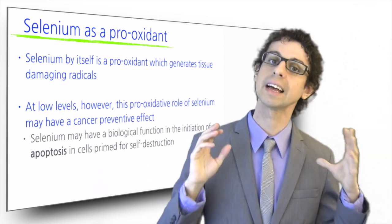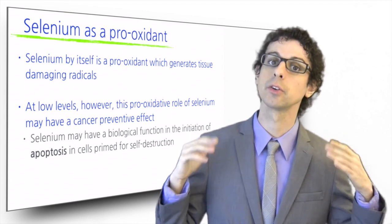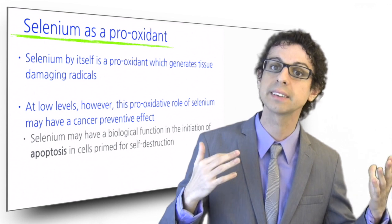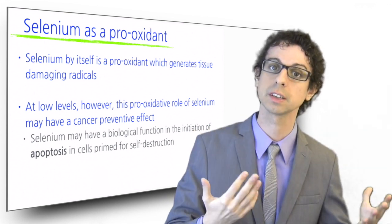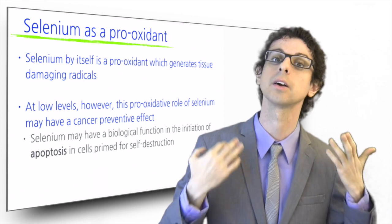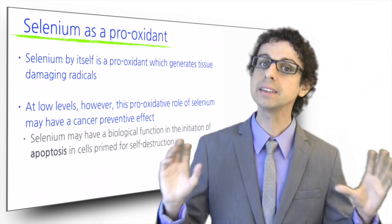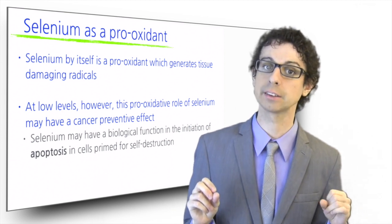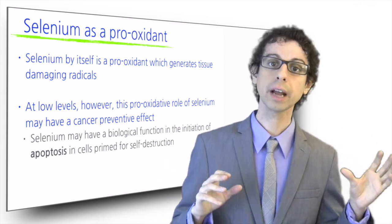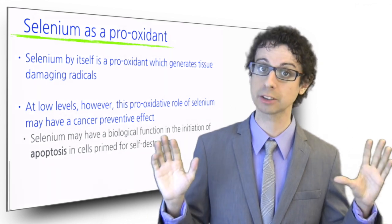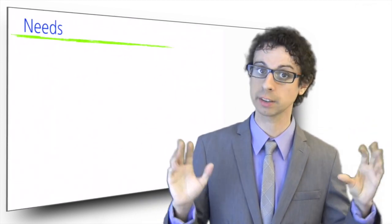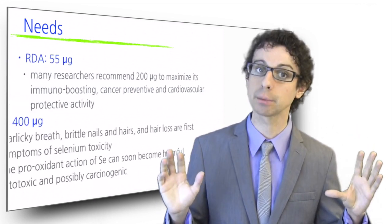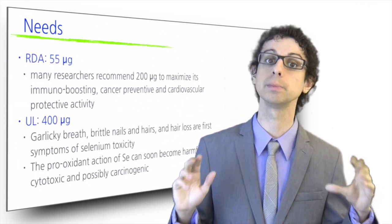But we're still not sure why. Is it because of its antioxidant activity? Or is it again a matter of hormesis — meaning, is it maybe the pro-oxidant activity of selenium itself that oxidizes cysteine residues and induces apoptosis in those cells that are already primed for it? These are very fascinating questions that hopefully researchers will be able to answer in the coming years. For now, we have to remember that it doesn't take too much selenium to exert toxic effects. The pro-oxidant action of selenium can soon become harmful, cytotoxic, and possibly carcinogenic.